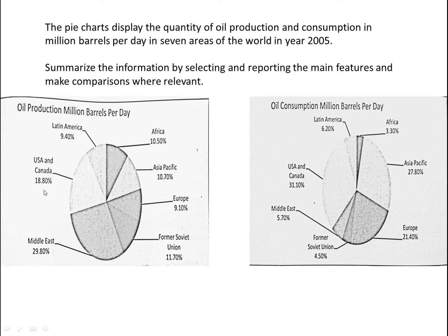We have two pie charts here. The first is about oil production in million barrels per day and the second is about oil consumption in million barrels per day, covering 7 regions of the world. In Latin America, production is more than consumption. In Africa, production is also more. In Asia Pacific, production is less and consumption is more. In Europe, production is less and consumption is more. In the former Soviet Union, production is more and consumption is less. In the Middle East, production is very high while oil consumption is very less. In USA and Canada, production is less than consumption.